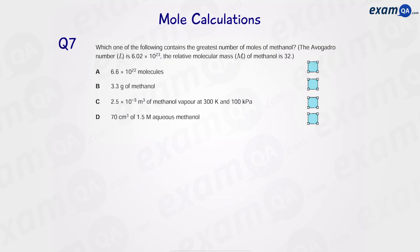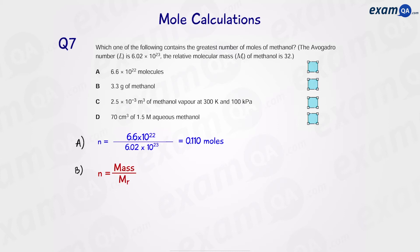Question 7: which one of the following contains the greatest number of moles of methanol? For part A, we've been given the number of molecules, so moles equals number of particles over Avogadro's constant — that's 6.6 times 10 to the power of 22 over Avogadro's constant. For part B, we've been given mass, so moles equals mass over Mr: 3.3 grams divided by 32 gives us 0.094 moles.